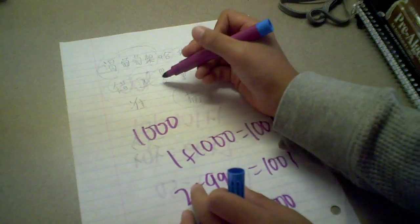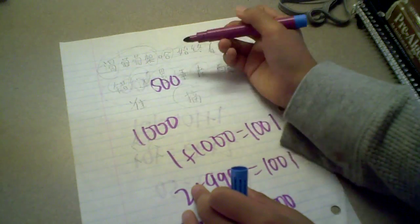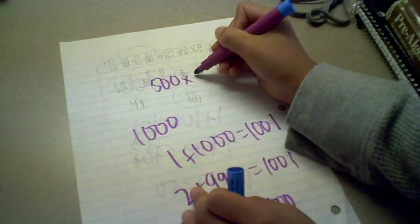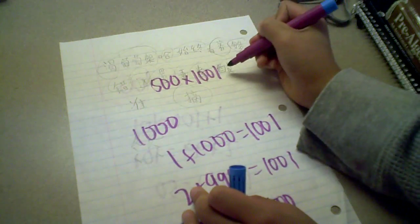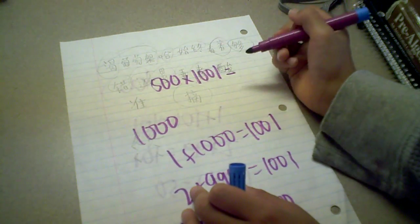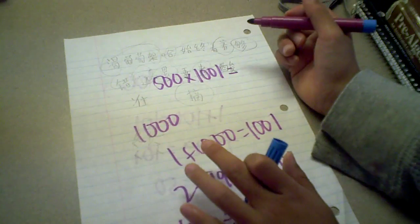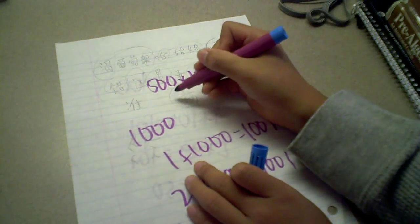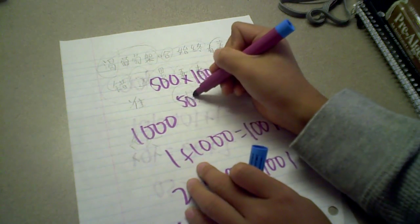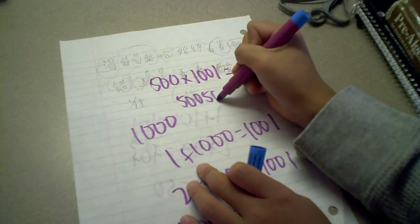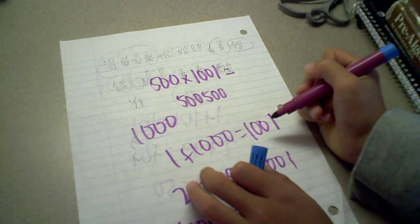And then 500 times 1,001 equals 500,500.